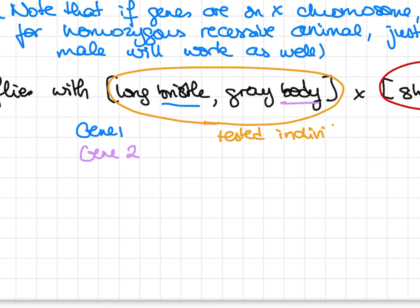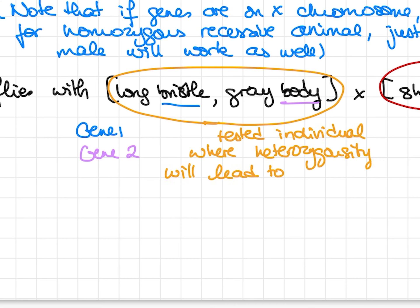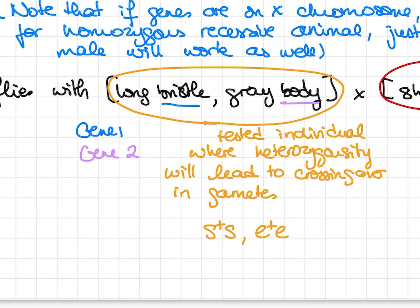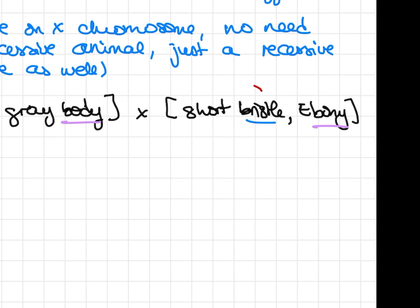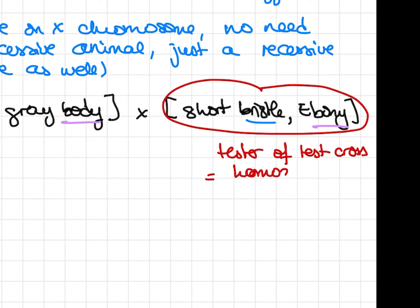You will want to test the individual with long bristles and gray body with the tester animal, which will be the animal with the homozygous recessive phenotype — that is, short bristles and ebony body.